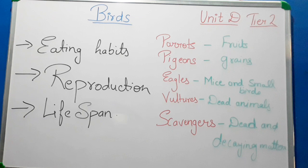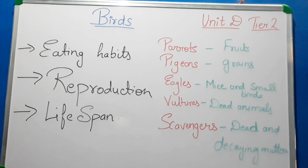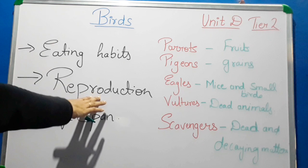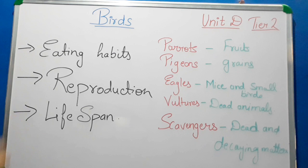The next topic is reproduction. Reproduction is producing their own young ones. Birds hatch from eggs and are cared for by parent birds. Reproduction is done by laying eggs and the baby birds come out from the egg.